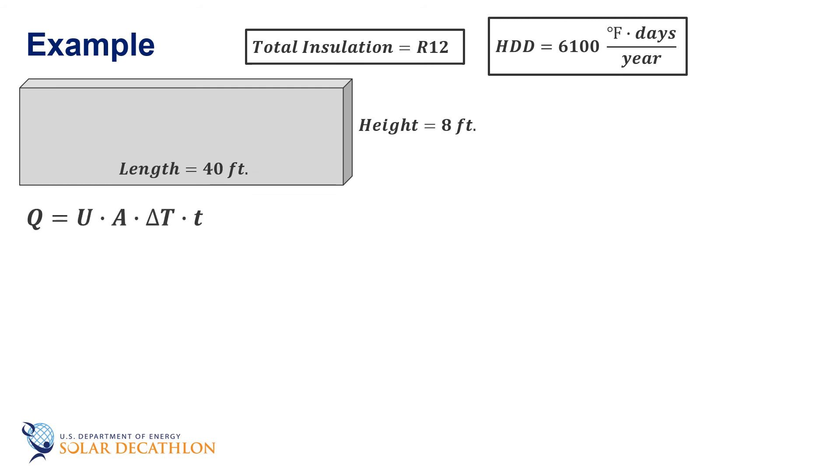Starting with our equation for heat transfer through the wall, or any other envelope component for that matter, we know that heating degree days is expressed as delta T and time. Area we can calculate and U can be replaced with 1 over R. The area is the length of the wall times its height, or in this case 40 feet times 8 feet, which equals 320 square feet.